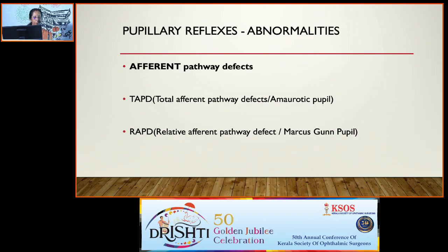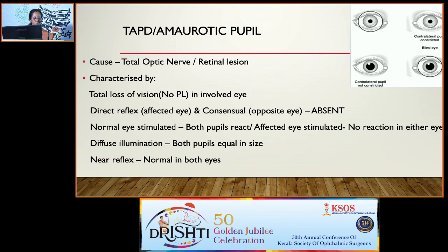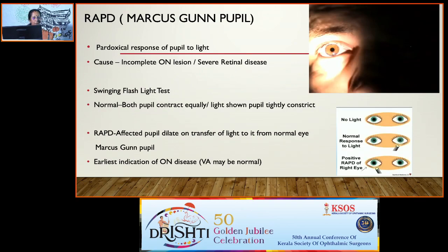Pupillary reflex abnormalities include afferent and efferent pathway defects. Total afferent pupillary defect (amaurotic pupil) is caused by total optic nerve lesion or severe retinal lesion, with total loss of vision in the involved eye. The direct reflex in the affected eye and the consensual in the opposite eye are absent when the affected eye is stimulated, but both eyes react normally when the normal eye is stimulated. In diffuse illumination both pupils are equal — no anisocoria — and the near reflex is normal. Relative afferent pupillary defect (RAPD), the Marcus Gunn pupil, is a paradoxical response demonstrated by the swinging flashlight test, caused by an incomplete optic nerve lesion or severe retinal disease.